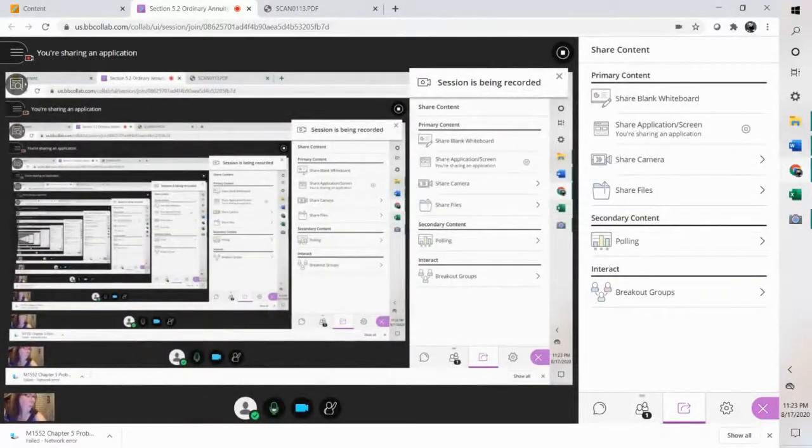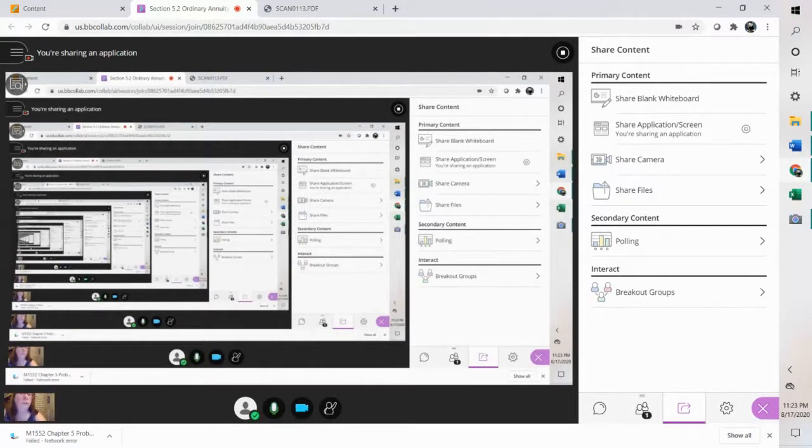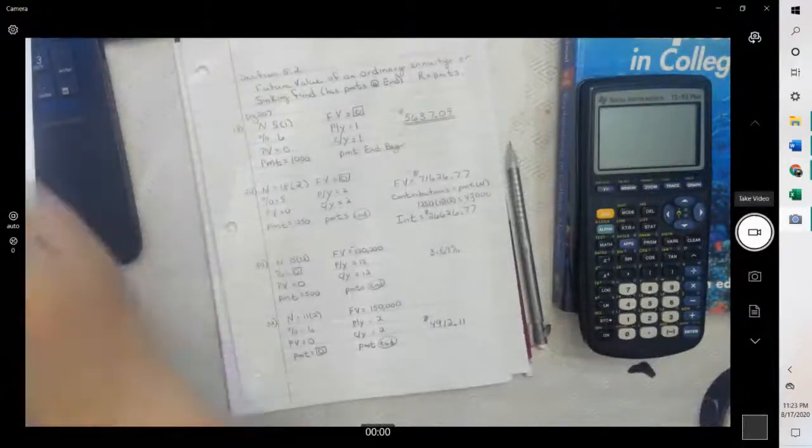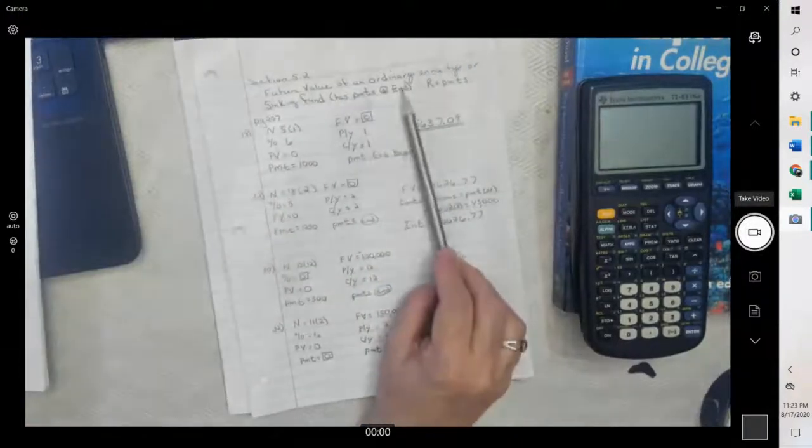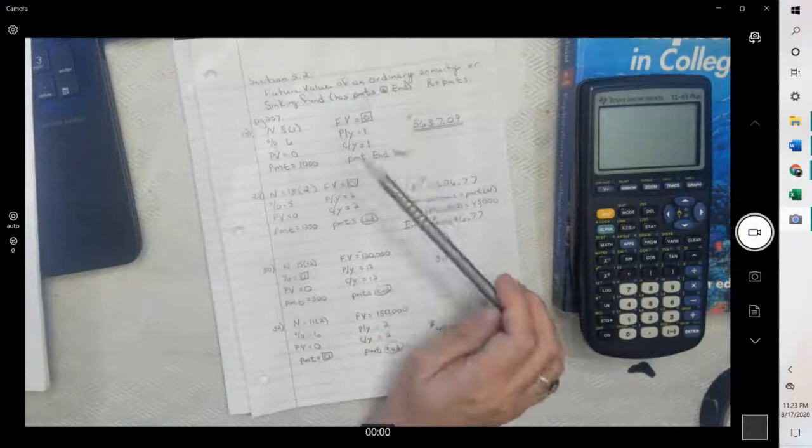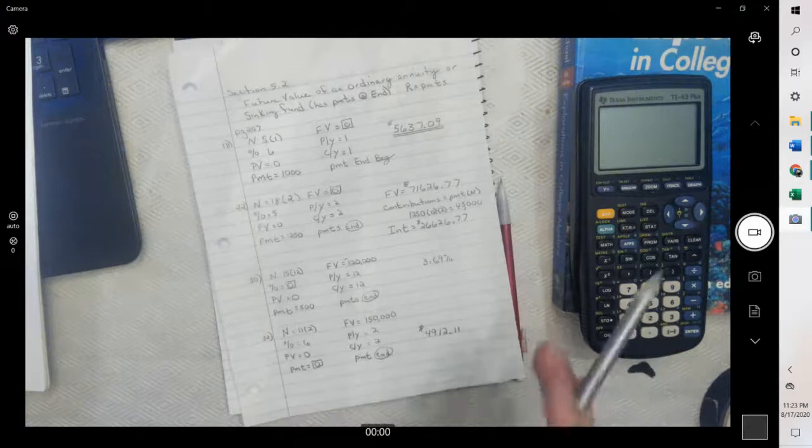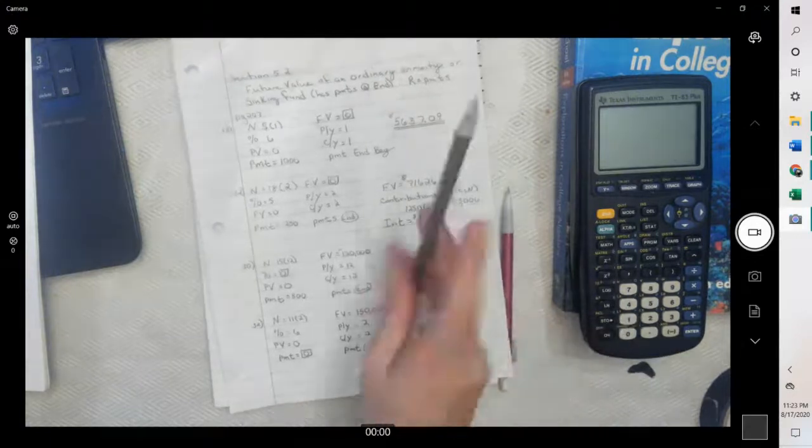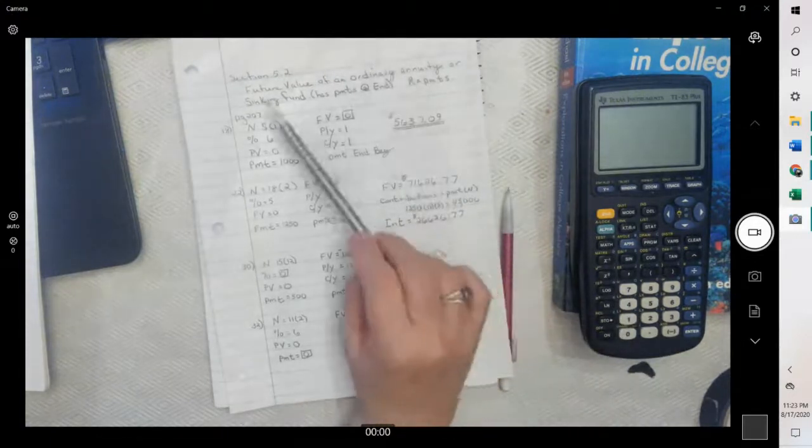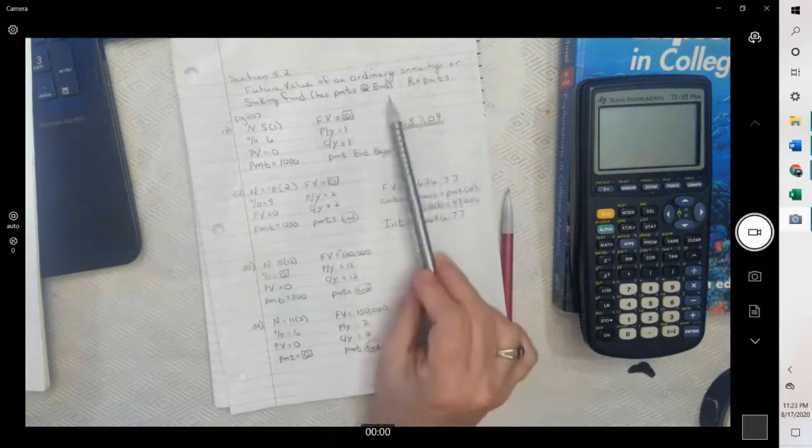So this is Section 5.2, and it's Ordinary Annuities and Sinking Funds. When you're working with an ordinary annuity or sinking fund, the payments are at the end. The only time there is a beginning is if it's annuities due, and we'll do that in another video. But for Ordinary Annuities and Sinking Funds, payments are at the end.